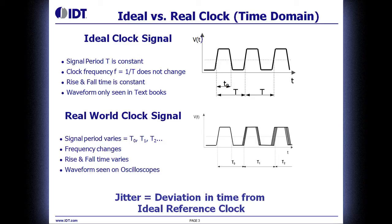On the bottom is a picture of a real-world clock signal. The signal period varies, the frequency changes, and the rise and fall time varies. This is the kind of clock signal that engineers see on oscilloscopes in their systems today. Jitter, very simply, is the deviation in time from the ideal reference clock. The picture on the top has no jitter; the picture on the bottom has jitter.